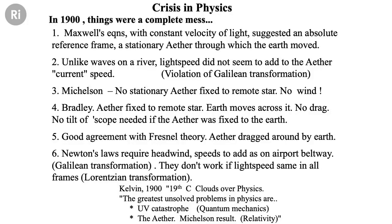Michelson's result was that there was no stationary ether fixed to the remote stars — that didn't help. Bradley's result was the opposite. One explanation for Michelson's result, which he didn't really want to put in his paper, was that the ether is bolted onto the earth. The church would have loved that. And that as the earth rotated, it dragged this ether stuff throughout the entire universe around with it. But that could not be true, because if the ether was dragged around with the earth, you wouldn't need to tilt your telescope in Bradley's experiment, because the light waves would be bolted onto the ether. So Bradley's result was contradictory to Michelson's.